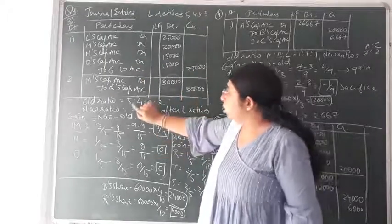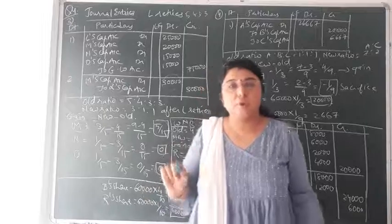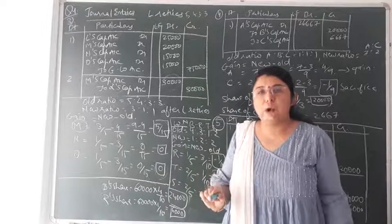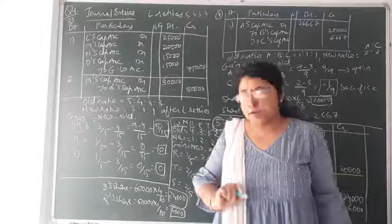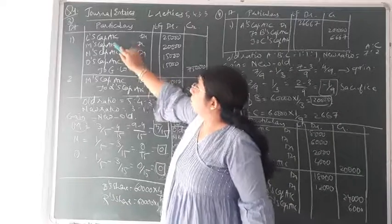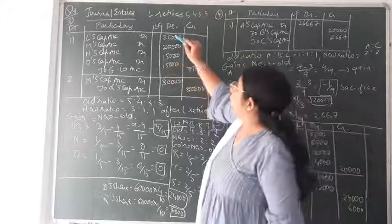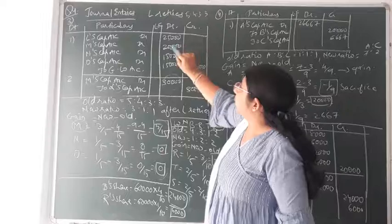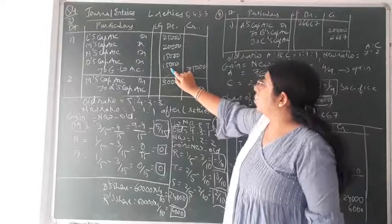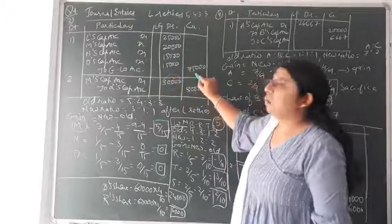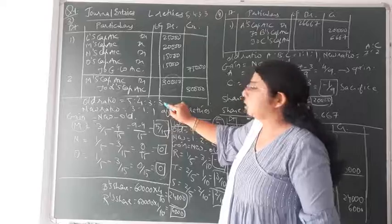So Rs. 75,000 is to be distributed in the old ratio — 5:4:3:3. Always the old goodwill existing in the firm before the retirement of any partner is to be distributed amongst all the partners in their old profit and loss sharing ratio. The journal entry is: partners' capital accounts debit to goodwill account credit. So L's capital account debit Rs. 25,000, M's capital account debit Rs. 20,000, N's capital account debit Rs. 15,000, O's capital account debit Rs. 15,000 — to goodwill account credit Rs. 75,000.